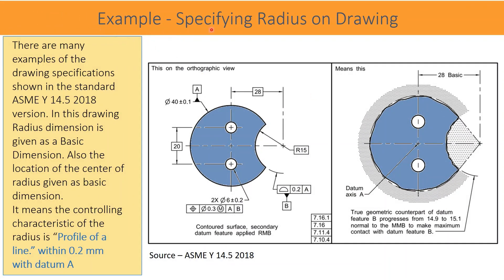There are many examples of drawing specifications shown in the standard ASME Y14.5 2018. In this drawing, the radius dimension is given as a basic dimension, and the location of the centre of the radius is also given as a basic dimension. This means that the controlling characteristic of the radius is profile of a line within 0.2 mm tolerance with reference to datum A.